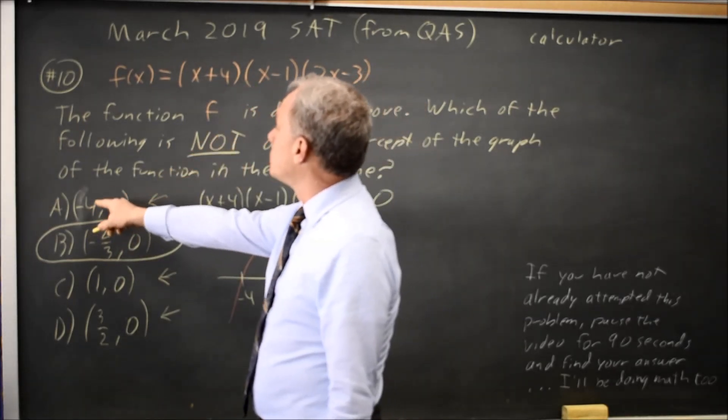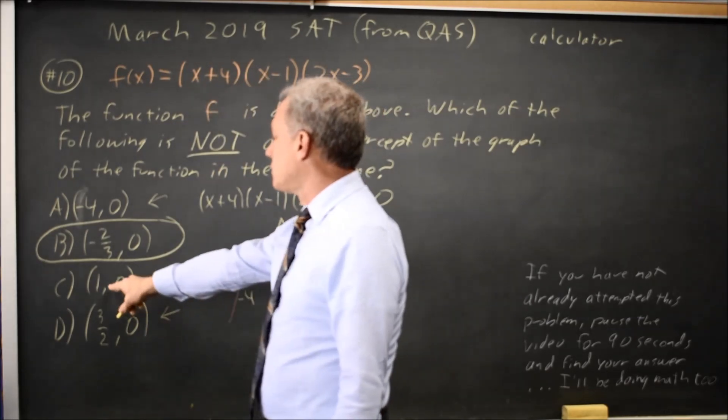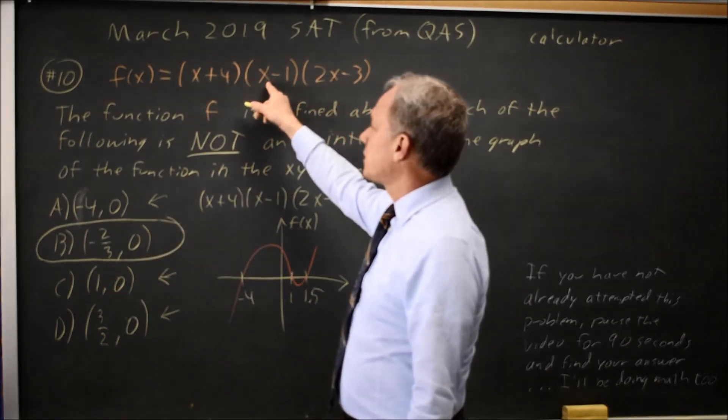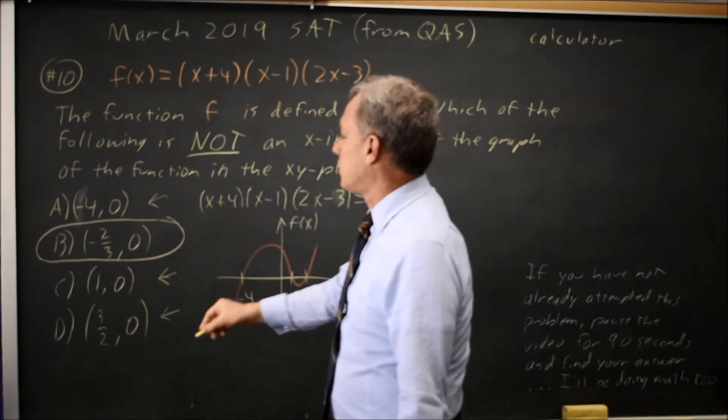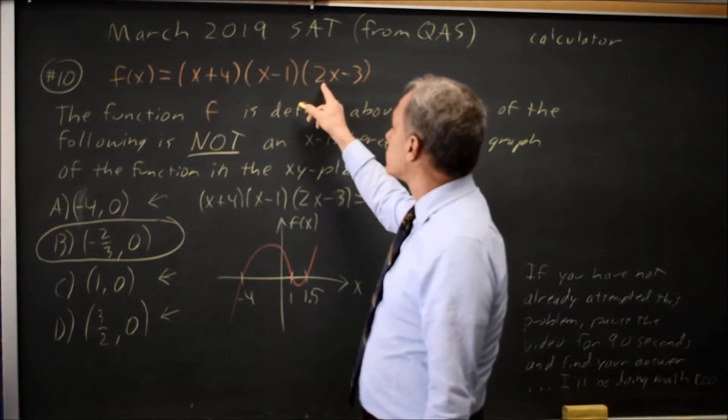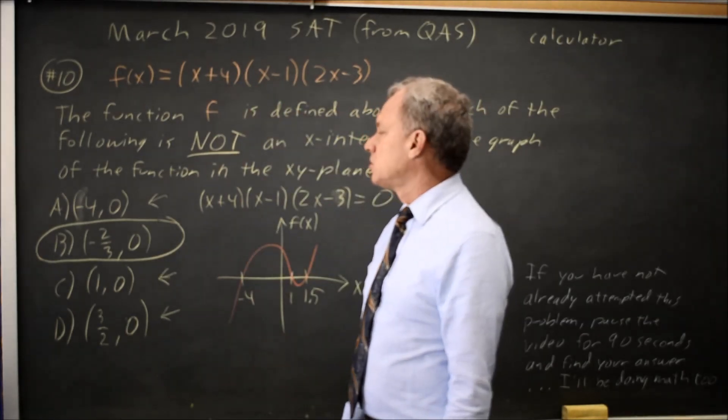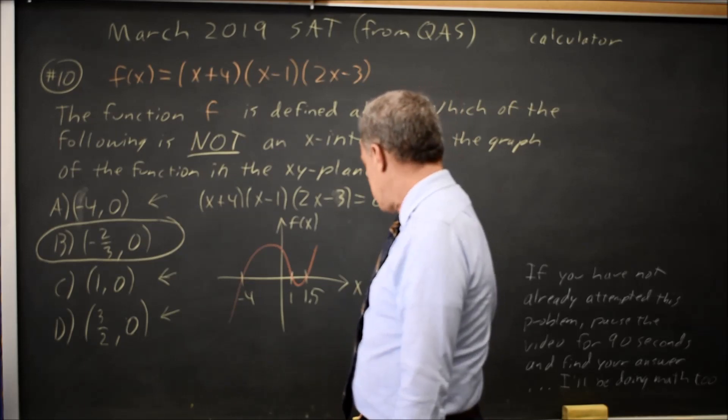So if you substitute negative 4 in for x, you get zero times whatever is zero. If you substitute in 1 for x, the second term is zero, and zero times anything is zero. If you substitute 3 halves for x, the third term is twice 3 halves is 3, minus 3 is zero, multiply that by anything, and you get zero. So choices A, C, and D give you zero for f(x).